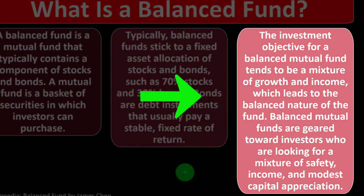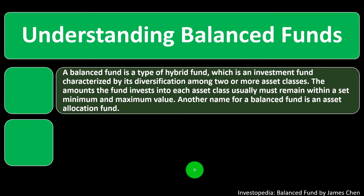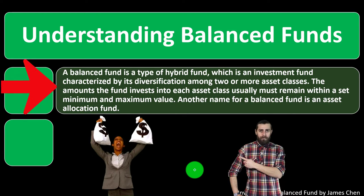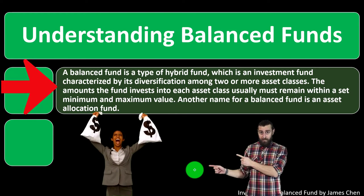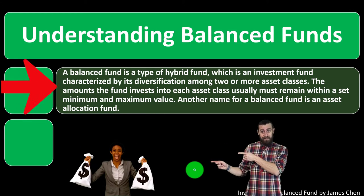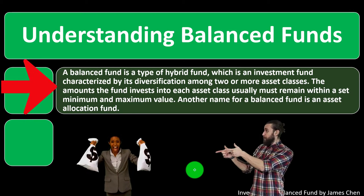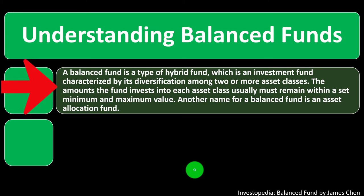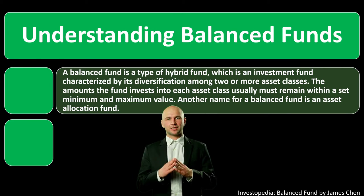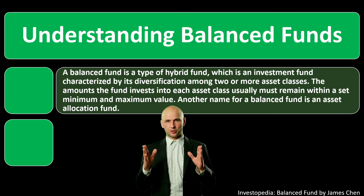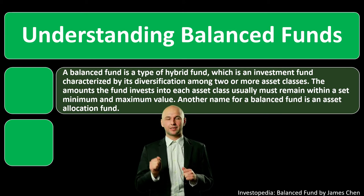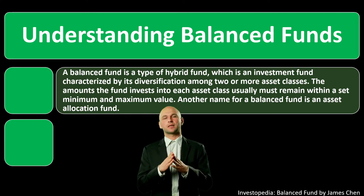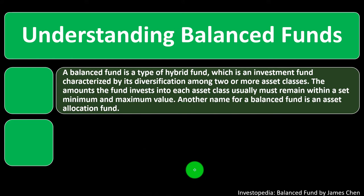Balanced mutual funds are geared towards investors looking for a mixture of safety, income, and modest capital appreciation. A balanced fund is a type of hybrid fund — an investment fund characterized by its diversification among two or more asset classes. The amounts the fund invests into each asset class usually must remain within a set minimum and maximum value, so you're not giving complete leeway to the fund manager to shift heavily between bonds and stocks. Another name for a balanced fund is an asset allocation fund.